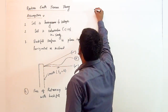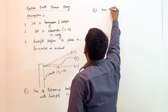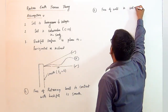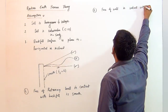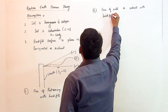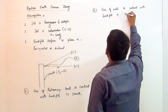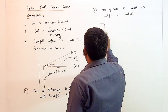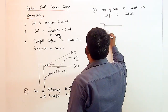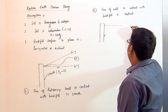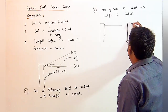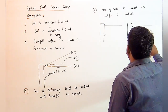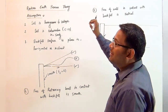The fifth assumption is that the face of the wall in contact with the backfill is vertical only. A wall with a vertical face is allowed, but if the wall has an inclined face, such cases are not considered by Rankine's theory.